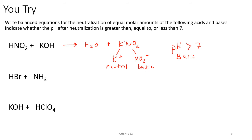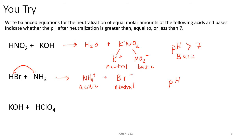HBr plus NH₃ is another example where ammonia is the base and grabs a proton from the acid. We end up forming ammonium cation NH₄⁺ and bromide anion Br⁻. The ammonium cation will be acidic, and Br⁻ is from a strong acid, so that would be neutral. The pH of the solution would be less than 7, or acidic, from the salt formed after neutralization.